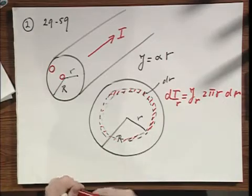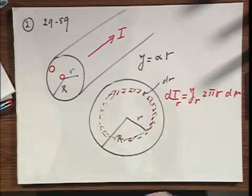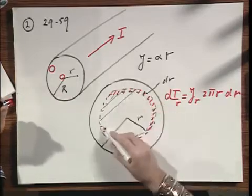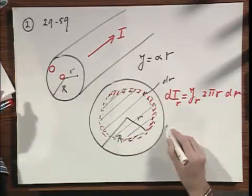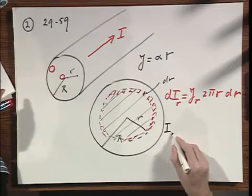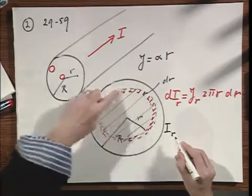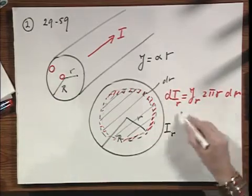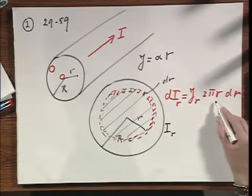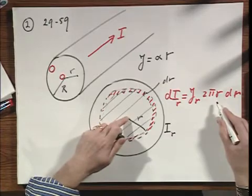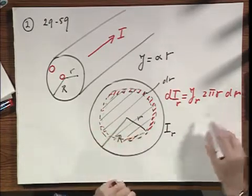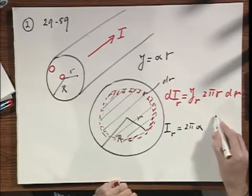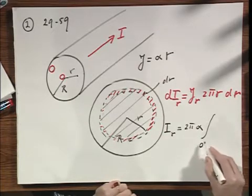So if I want to know the total current that flows in this whole surface area, in other words, up to radius R, including this whole area, then I have to do an integral. r has to go from 0 to R.